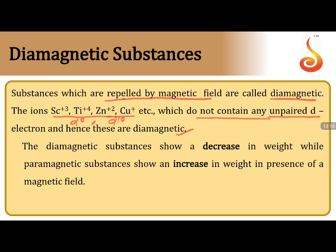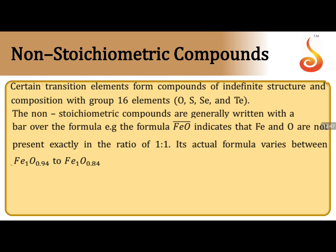An important applicative point: when a diamagnetic substance is placed in an external magnetic field, you will see a decrease in its weight. When a paramagnetic substance is placed in a magnetic field, you see an increase in weight. This is very important and can be confusing — questions based on this distinction are commonly expected in examinations.